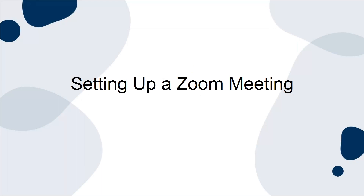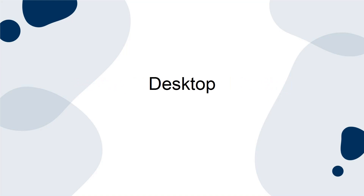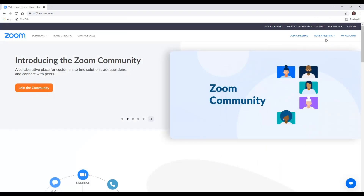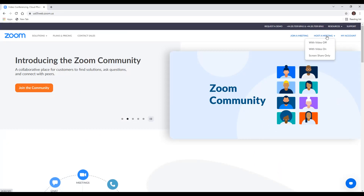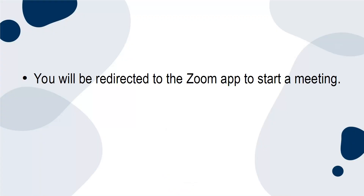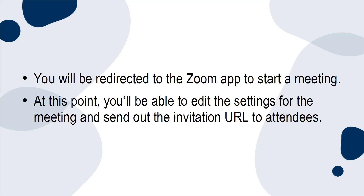Here are the instructions for easily setting up a Zoom meeting. Desktop. Start by logging into your Zoom account. Move the cursor over Host a Meeting in the top right corner of your screen and choose from the following: video on, video off, or screen share only. You will be redirected to the Zoom app to start a meeting. At this point, you'll be able to edit the settings for the meeting and send out the invitation URL to attendees.